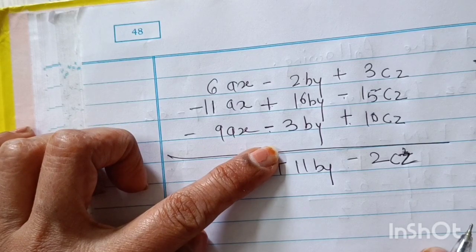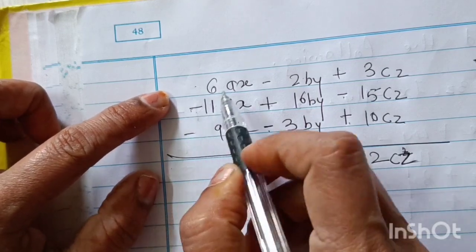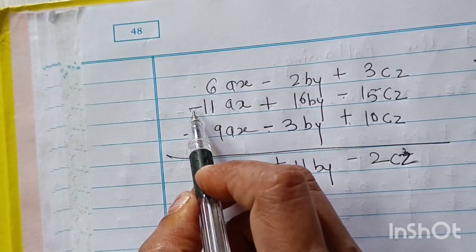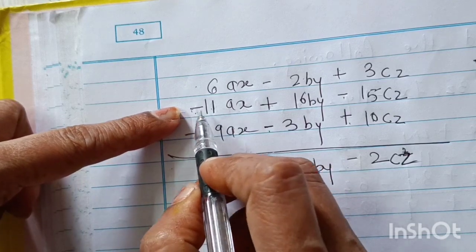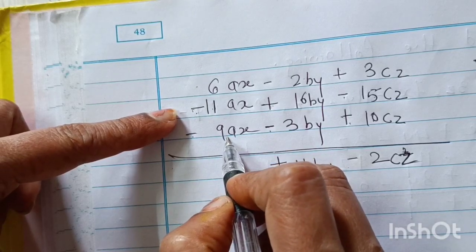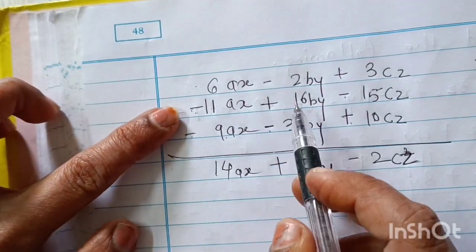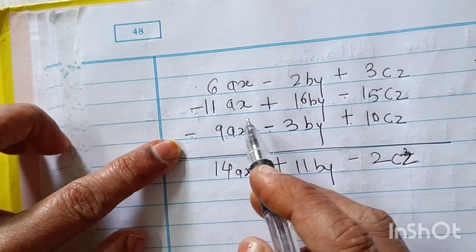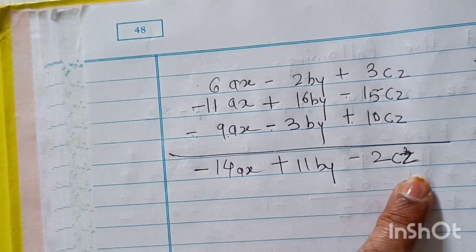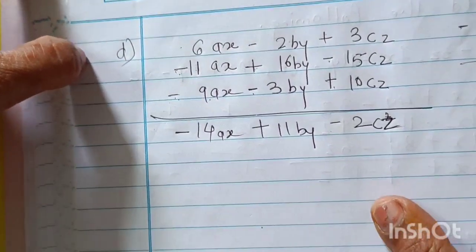I solved this vertically and orally. Now plus minus minus gives minus: 11 minus 6 = 5, negative 5 because bigger number is negative. Then minus plus gives: 5 plus 9 = 14. Bigger number is 9 which is negative, so negative 14AX. After that we continue with the next part.